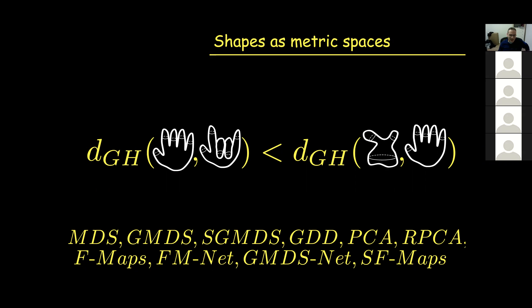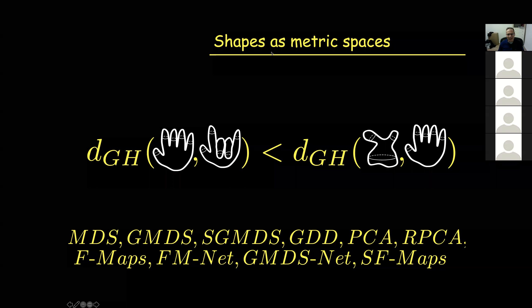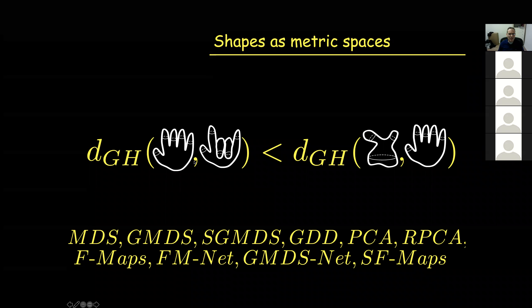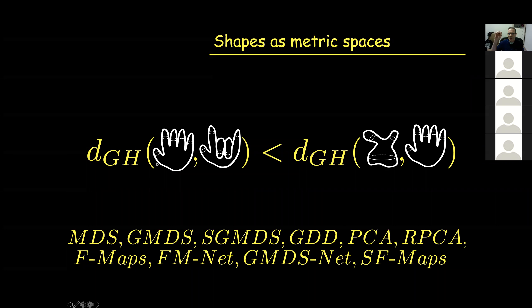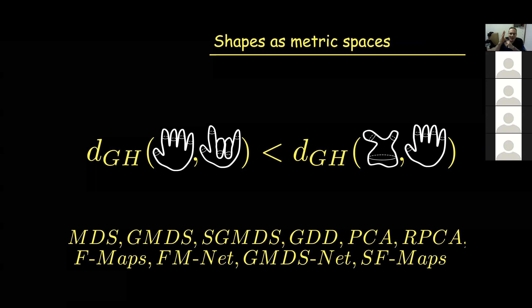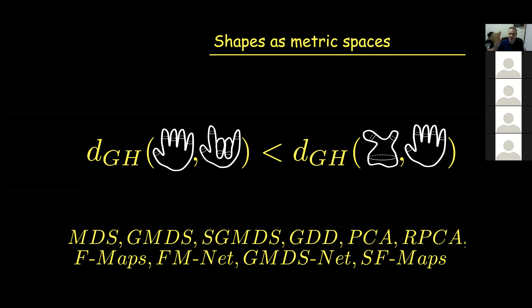The essence of what we do is treat shapes as metric spaces. If you think about the hand in different poses, from the point of view of an insect walking on the hand, it doesn't see much difference. If you consider this as a Riemannian manifold with the right metric, the metric doesn't change much. There is a way of measuring discrepancy or dissimilarity between metric spaces.